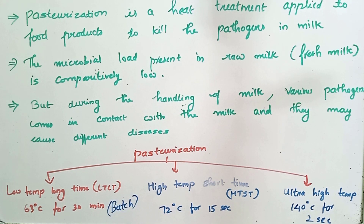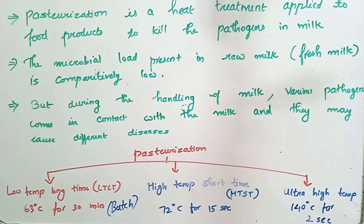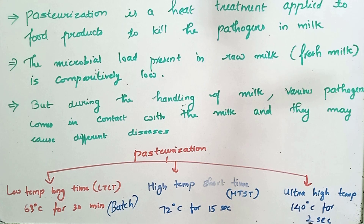In High Temperature Short Time pasteurization, we apply a high temperature for a short period of time — the milk is heated at 72 degrees Celsius for 15 seconds. In Ultra High Temperature pasteurization, an ultra high temperature of 140 degrees Celsius is applied, and since we are applying such a high temperature, the time required is only two seconds. These are the three types of pasteurization.